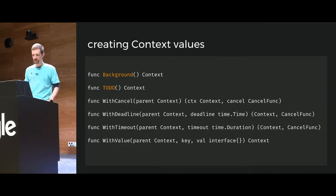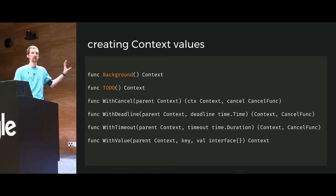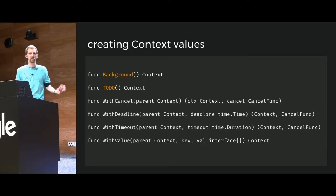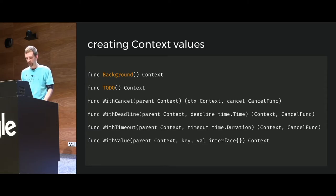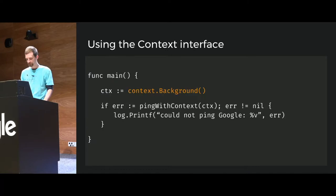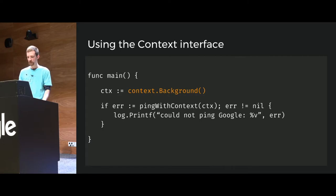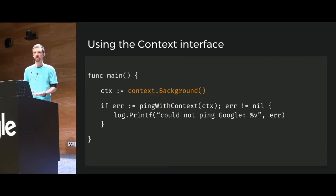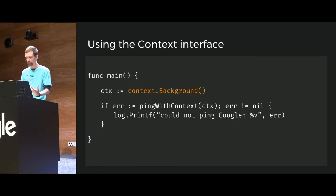Another one worth noting is todo(), which is essentially the same as background(), except it labels the fact that you don't know what context to use in that particular scenario. You can go back and check that later to make sure you're passing context around properly. The easiest way is to get context.Background() and pass it to ping-with-context, but this essentially doesn't do anything — there are no timeouts associated with it. Same with todo().